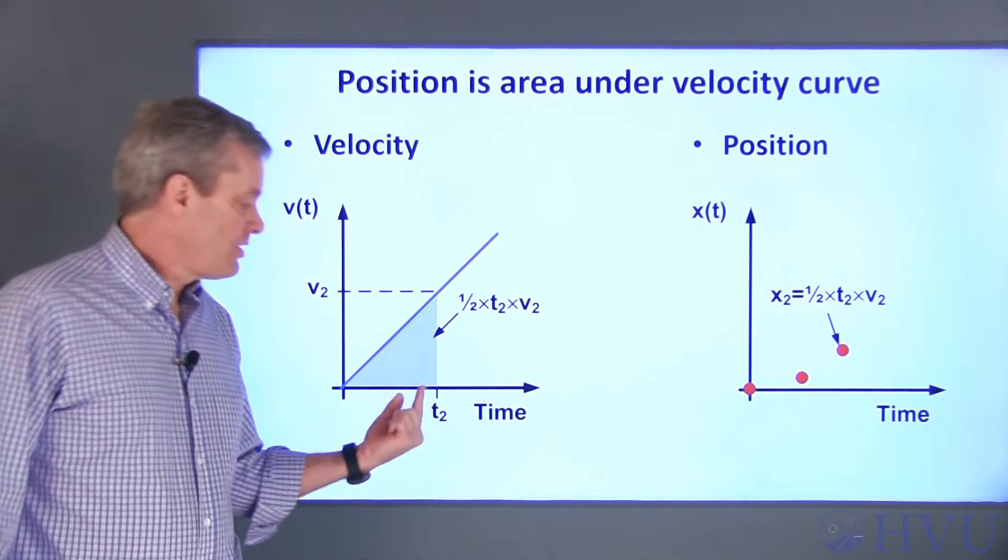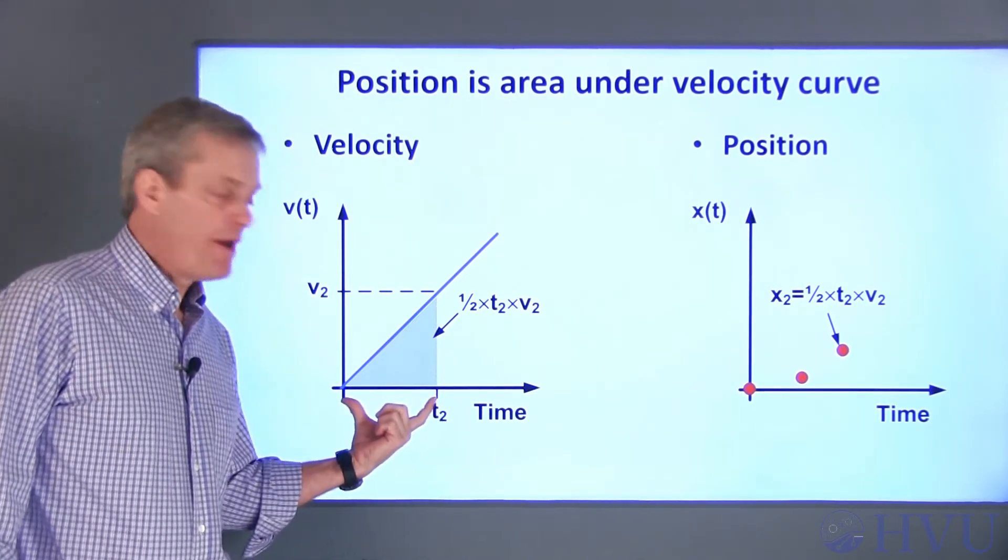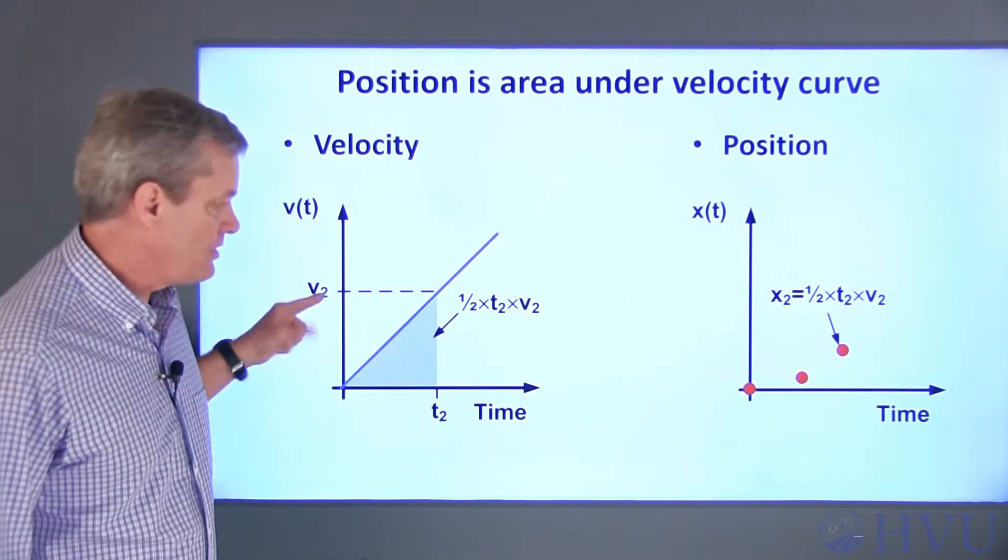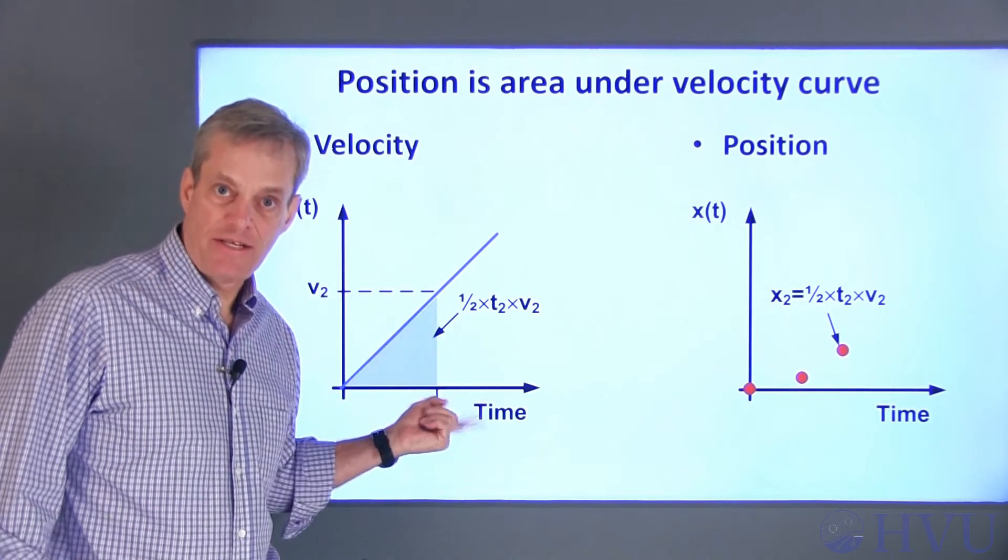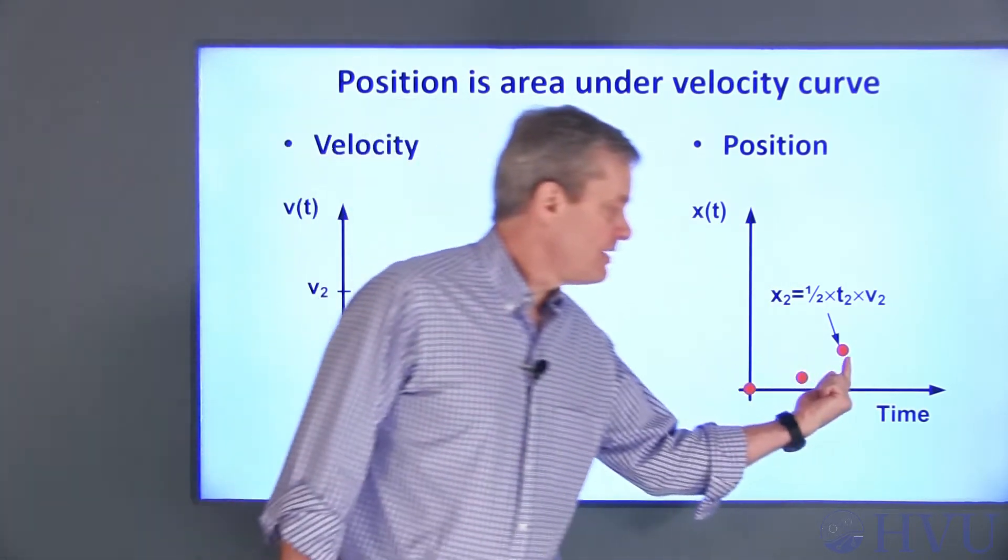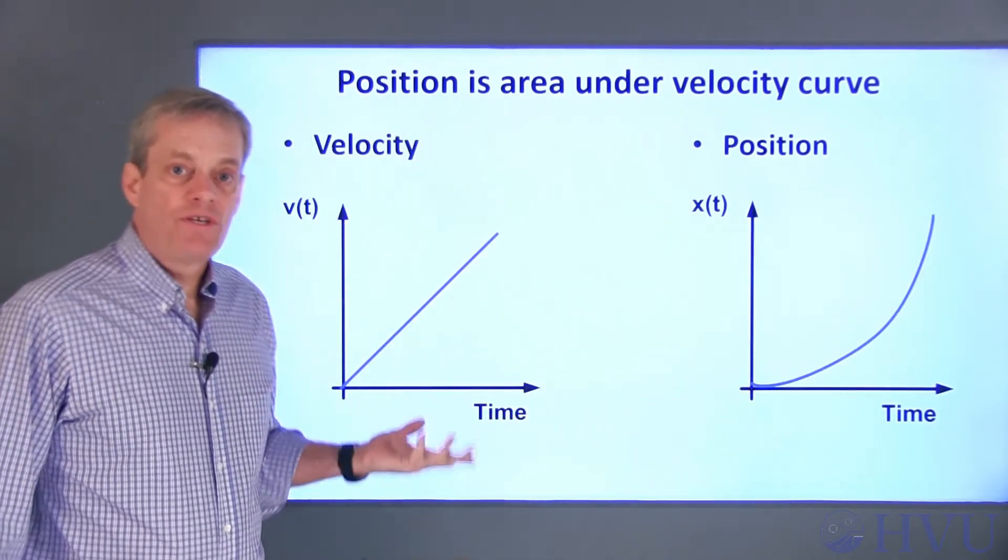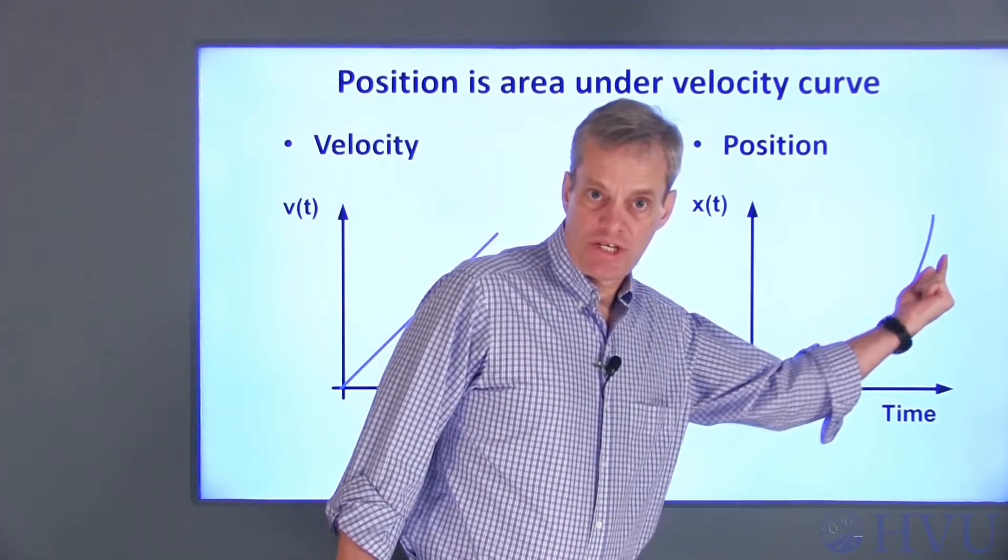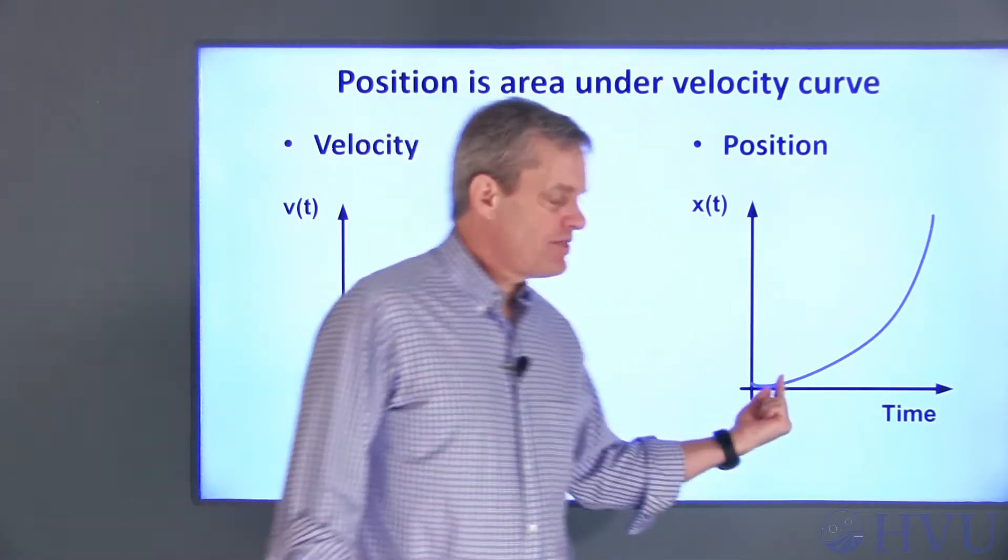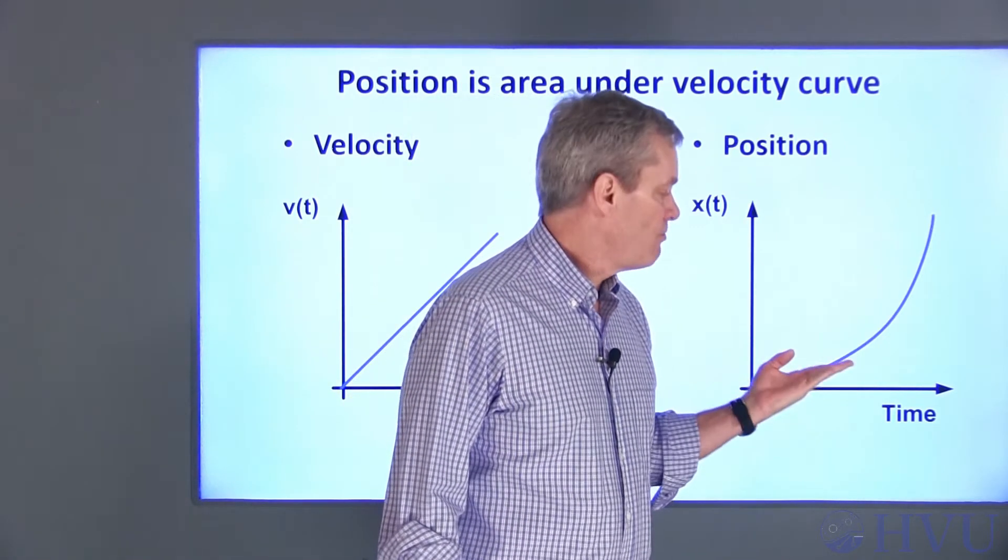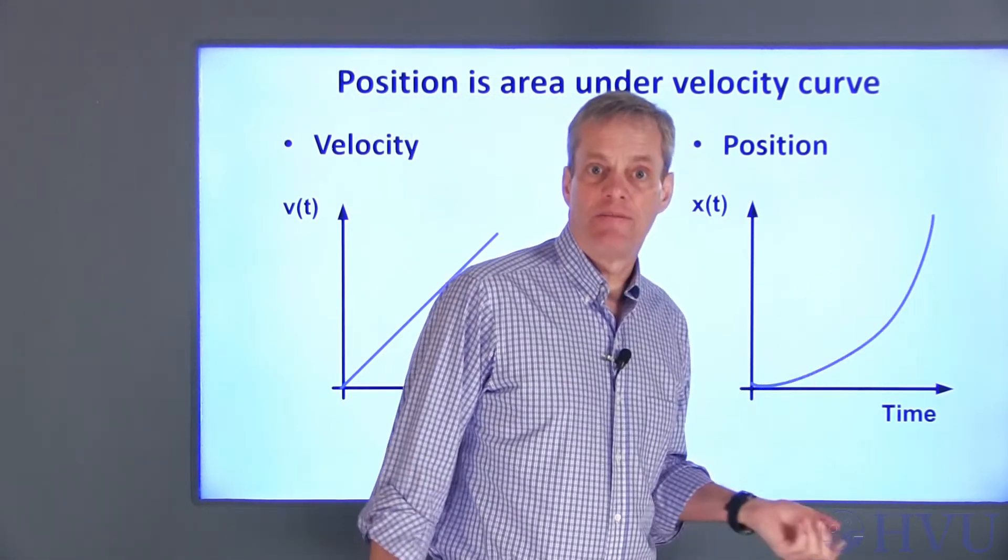Likewise, the area under the velocity curve at time t2 is one half of t2 times v2, where v2 is the rock's velocity at time t2. This gives the rock's position at time t2. So this is approximately the rock's position as a function of time. Notice that the rock's position is changing more and more rapidly as time increases.